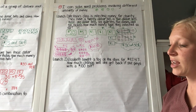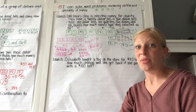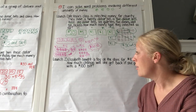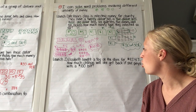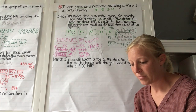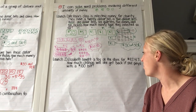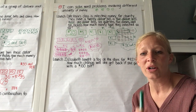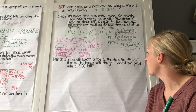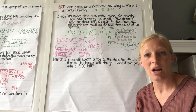Let's take a peek at this next problem. It's a humdinger — I'm not going to lie. It took me some thinking time to make sense of this problem, but I have no doubt you'll figure it out. Elizabeth bought a toy at the store for $97 and 47 cents. How much change will she get back if she pays with a $100 bill?